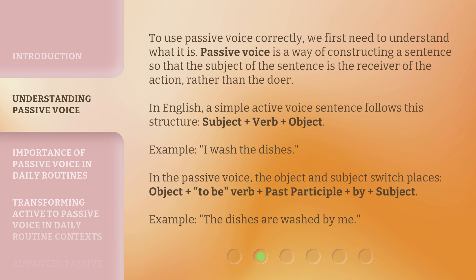To use passive voice correctly, we first need to understand what it is. Passive voice is a way of constructing a sentence so that the subject of the sentence is the receiver of the action, rather than the doer. In English, a simple active voice sentence follows this structure: Subject + Verb + Object. Example: 'I wash the dishes.' In the passive voice, the object and subject switch places: Object + to be + Verb past participle + by + Subject. Example: 'The dishes are washed by me.'